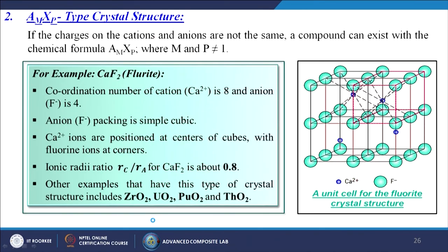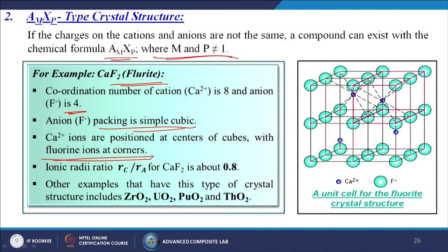In AMXP type crystal structures, the charges on cations and anions are not the same, so the chemical formula is AMXP where M and P are not equal to 1. For example, CaF₂ (fluorite): the coordination number of Ca²⁺ cation is 8 and F⁻ anion is 4. Calcium ions are positioned at the centres of cubes with fluorine ions at corners. The ionic radius ratio RC/RA for CaF₂ is about 0.8. Other examples: zirconium oxide, uranium oxide, plutonium oxide, and thorium oxide.